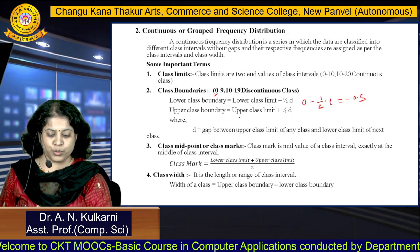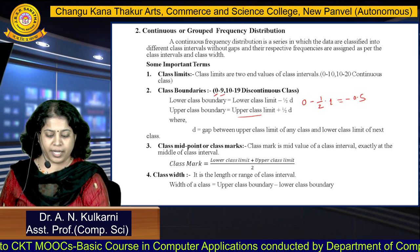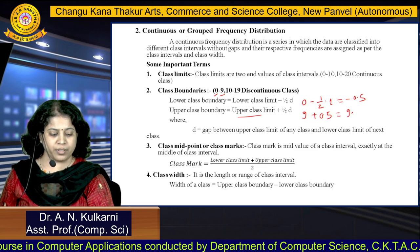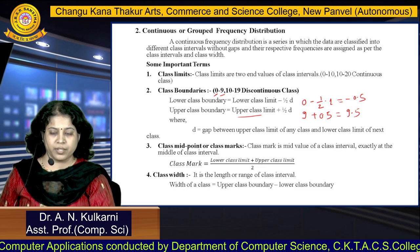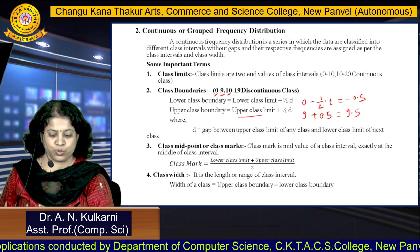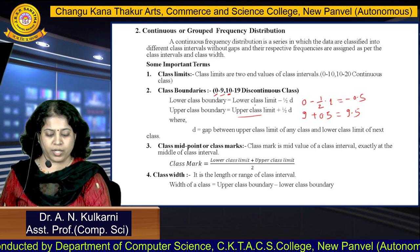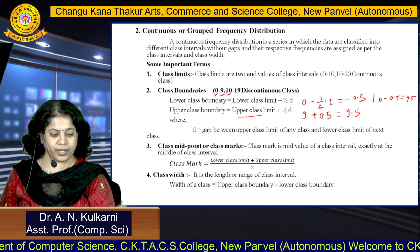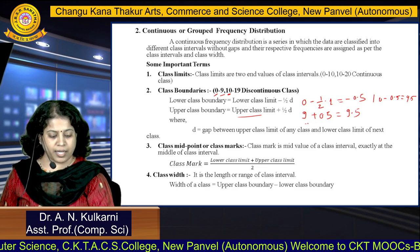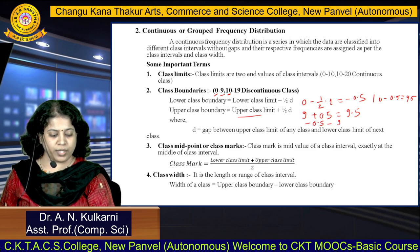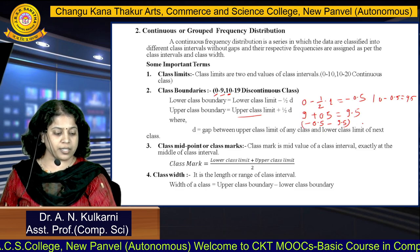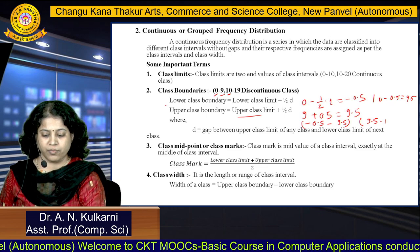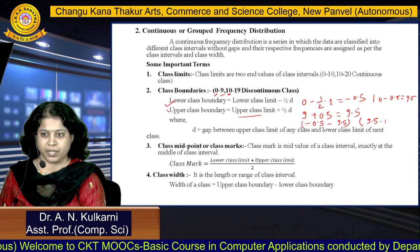Upper class boundary equals upper class limit plus 1/2 × D. That is 9 + 0.5 = 9.5. Similarly, for the next class, 10 is the lower class limit, so 10 minus 0.5 equals 9.5. The previous class has boundaries −0.5 to 9.5, and the next class is 9.5 to 19.5, and so on. In this way we can calculate lower class boundary and upper class boundary.